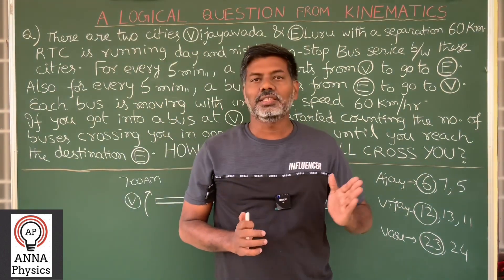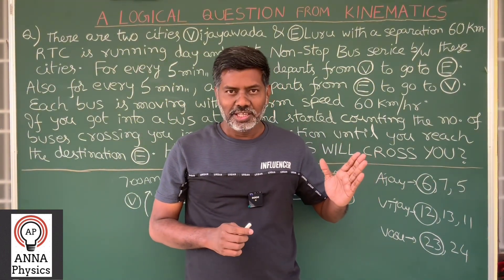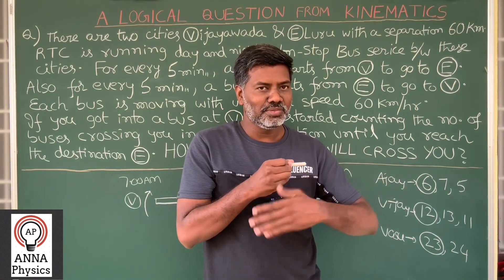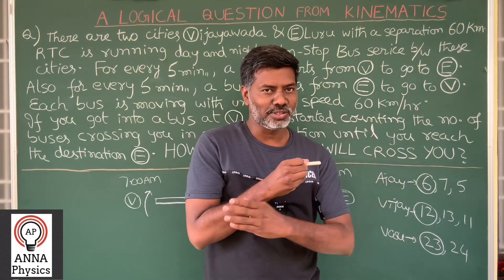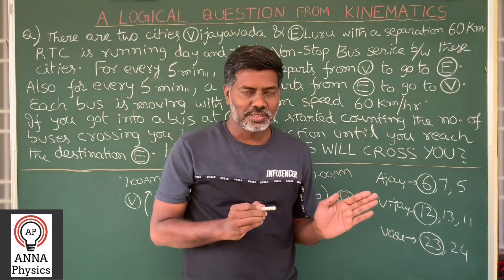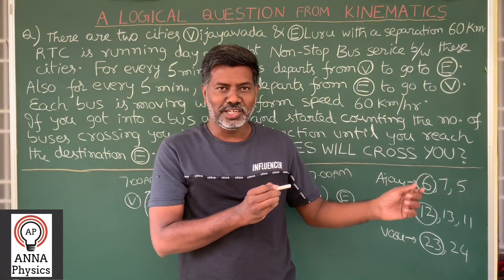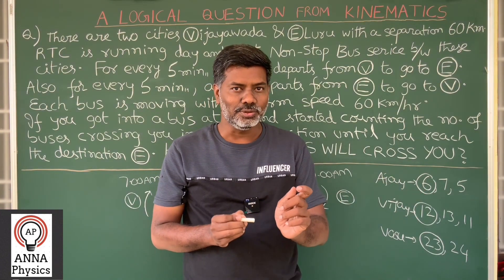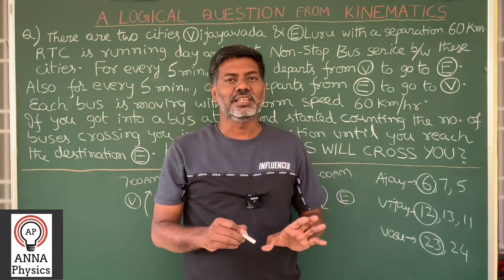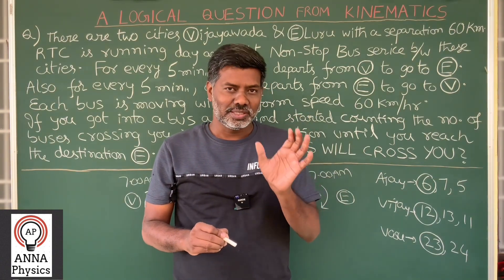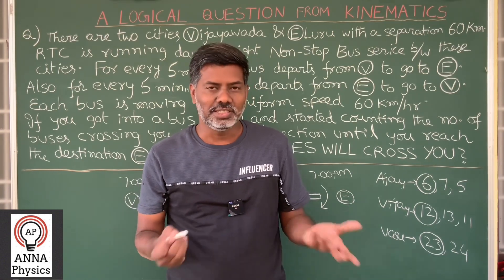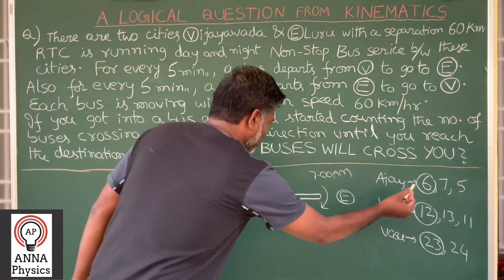Now, for the first 30 minutes of his journey, no bus crossed him. For the last 30 minutes of his journey, one bus will cross him, after 5 minutes one more bus will cross him, after 5 minutes one more bus will cross him. Like this, for the remaining journey of 30 minutes — 30 minutes equals 6 times 5 minutes — so he is thinking that the total number of buses facing and crossing him is 6. That's why he came up with the answer 6.